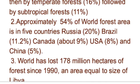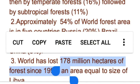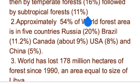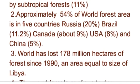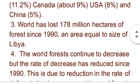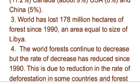World کے forests کا approximately 54% area صرف 5 countries میں پایا جاتا ہے۔ اس میں maximum area Russia کے اندر آتا ہے جو total forest area کا 20% ہے۔ Second position پر Brazil ہے with 11.2%، third پر Canada ہے with 9%، fourth پر USA ہے with 8%، اور fifth پر China ہے with 5% area۔